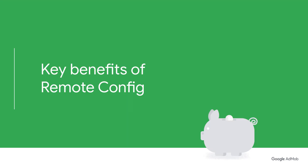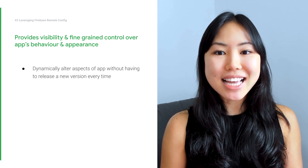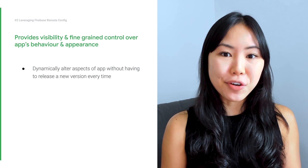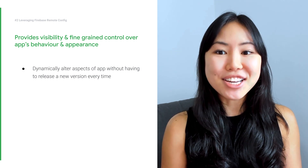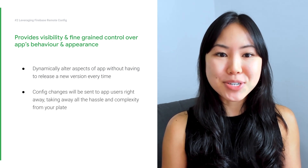In addition to ad format testing, Remote Config offers several other benefits. First, Remote Config enables developers to configure, control, and change your app without releasing a new version. It gives you a detailed view and control over your app's behavior and appearance, so you can make changes by simply updating its configuration in Firebase. This means you can dynamically alter aspects of your app, such as customizing UI or turning certain features on and off, all without having to release a new version every time.